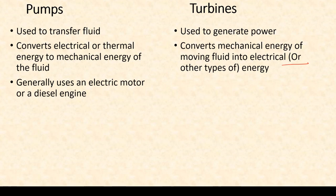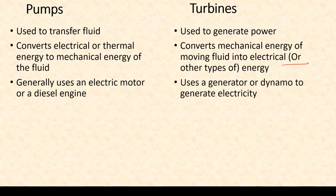A pump uses an electric motor or sometimes also a diesel engine, whereas a turbine uses a generator or dynamo to generate electricity. That's the basic difference between a pump and turbine, and in our subsequent lectures we are going to dive deep into their working principles. That's the end of this short introductory lecture — thank you.